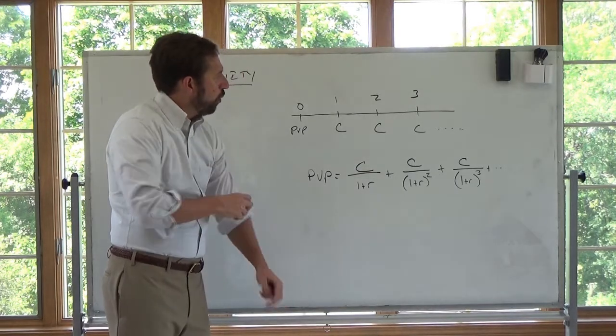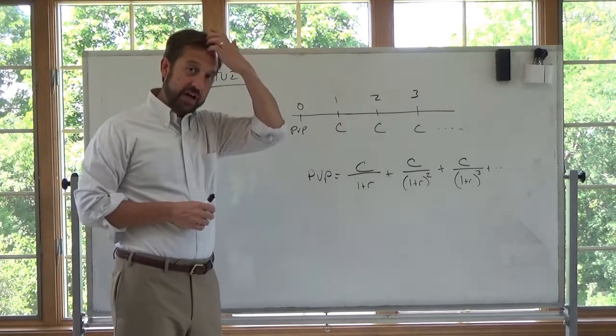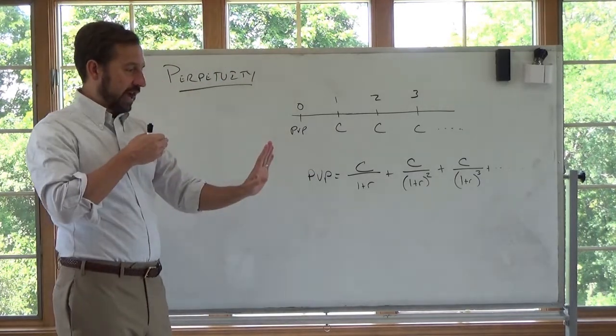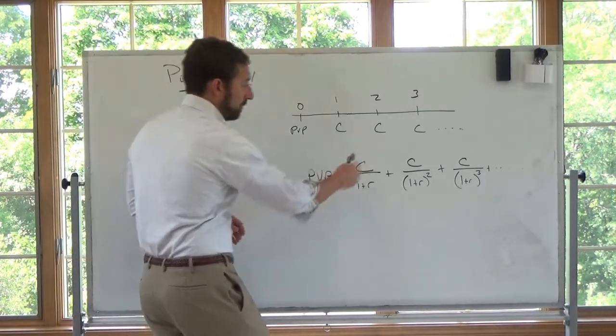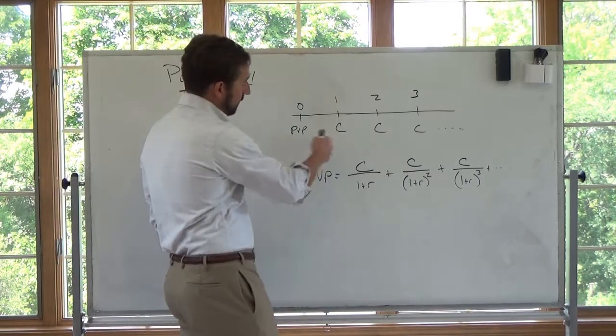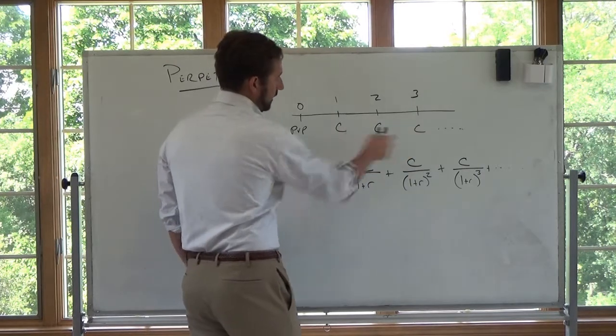So the idea here is given a perpetuity, how do we find the present value of it? From looking at single cash flows, we can easily find the present value of perpetuity simply by discounting each cash flow individually. So discount this back one period, back two periods, back three periods.